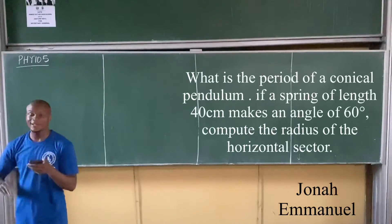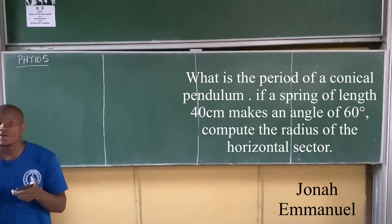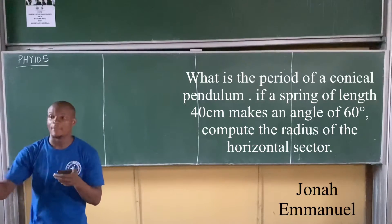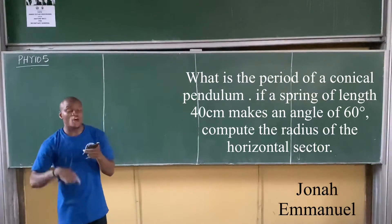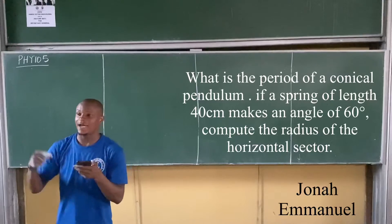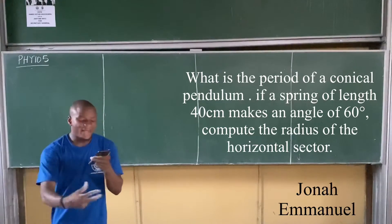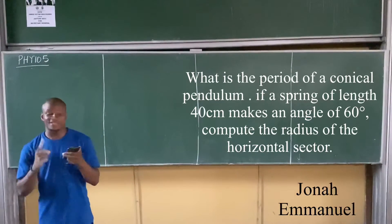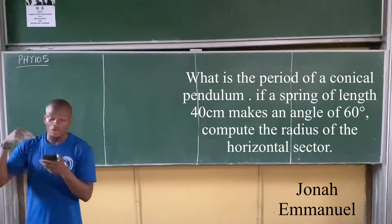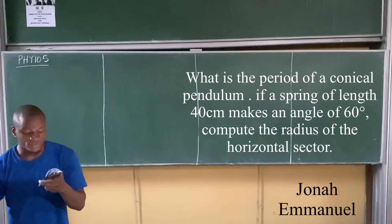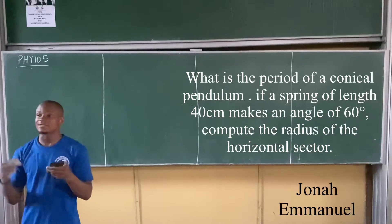What is the period of a conical pendulum if a spring of length 40 cm makes an angle of 60 degrees? Semicolon. Compute the radius of the horizontal sector.